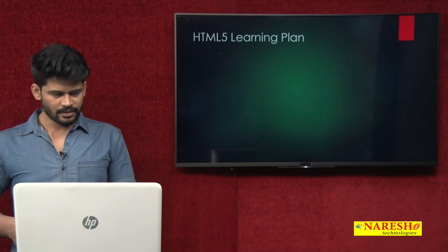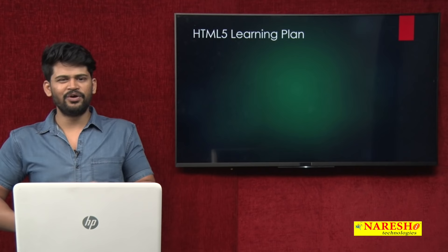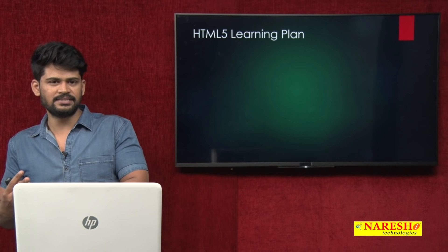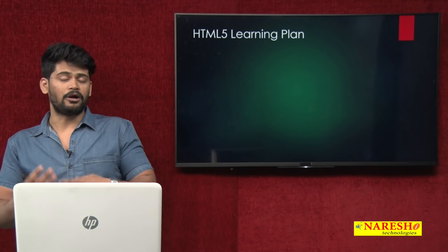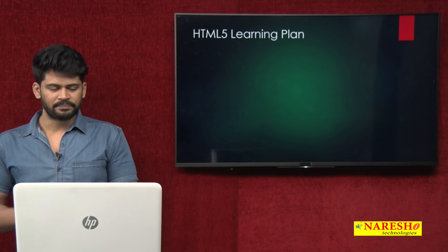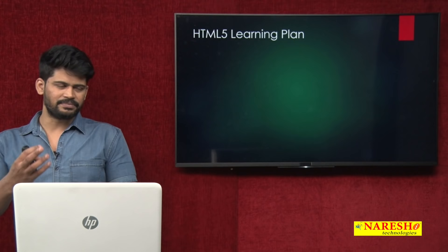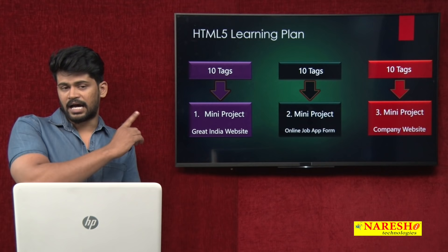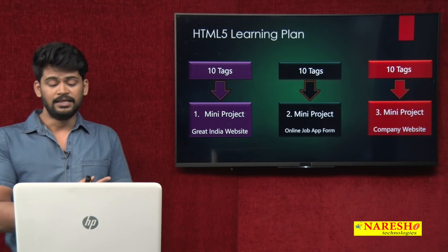HTML5 learning plan. We are all new to UI development and we don't know HTML or CSS — how can we do it? You have lots of technologies and must use all combinations to develop; how can we learn all of them? My way of learning is very simple. First, we start with HTML5 — the complete, all the tags. In HTML, there are 25 to 30 tags. I divided HTML tags into three parts: first we learn 10 tags and build one mini project, then we learn the next 10 tags and build one mini project — an online job application form, then we learn the remaining 10 tags and start one mini project — a company website.